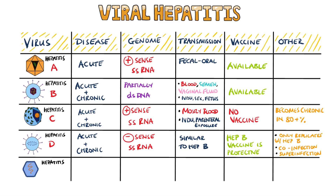Hepatitis E is similar to hepatitis A in that it usually produces an acute and typically self-limiting disease, but it is more severe in pregnant women and may become chronic in immunosuppressed individuals.